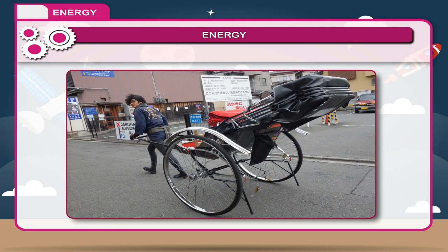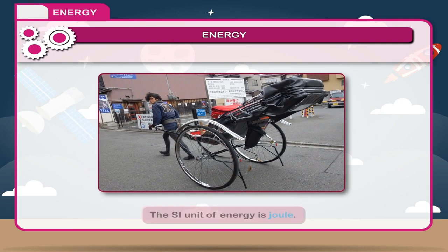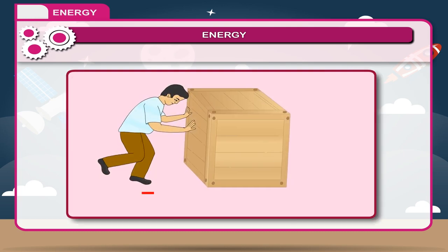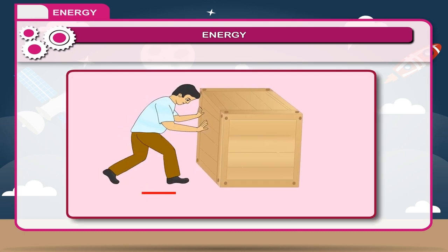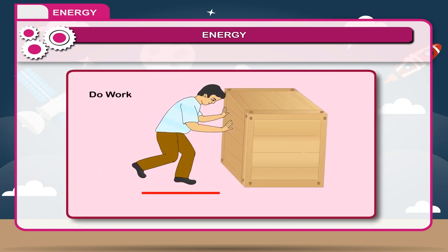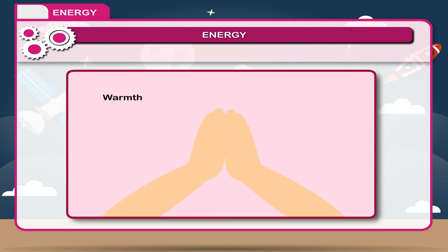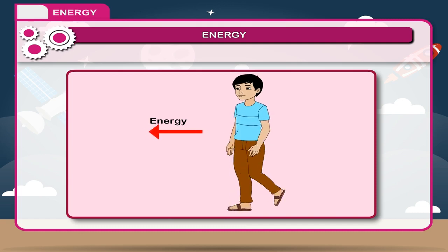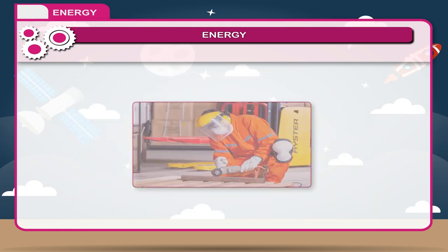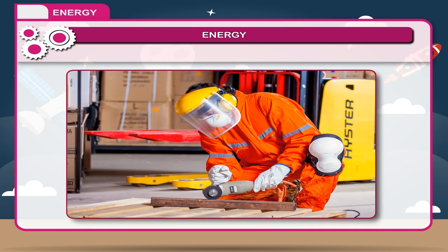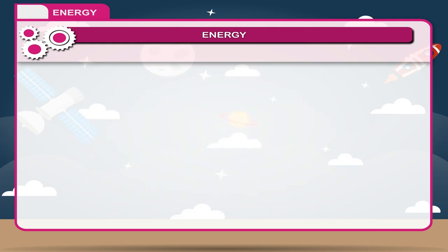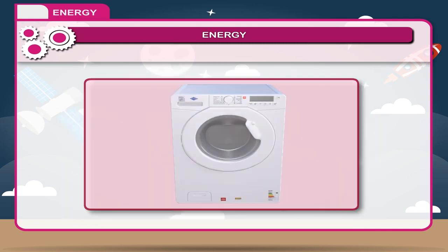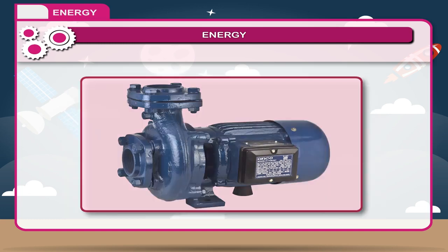Energy has the same unit as that of work. The SI unit of energy is joule. Energy is used in various forms: to do work, to provide warmth, and to move goods and people from one place to another. Energy is also used to operate many devices. Electrical energy is used to run washing machines and electric pumps.